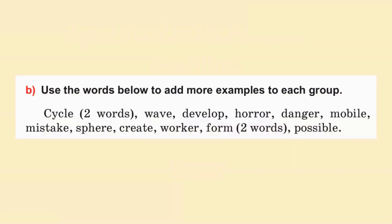Now use the words below to add more examples to each group. Cycle 2 words. Wave. Develop. Horror. Danger. Mobile. Mistake. Sphere. Create. Worker. Form. Two words. Possible.